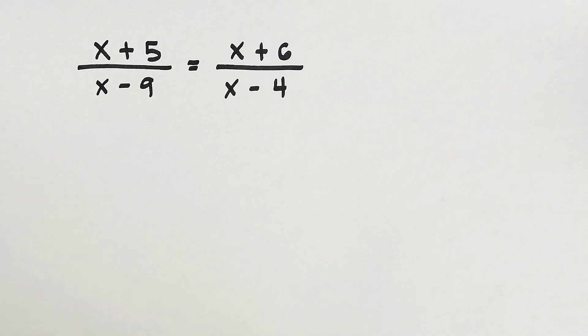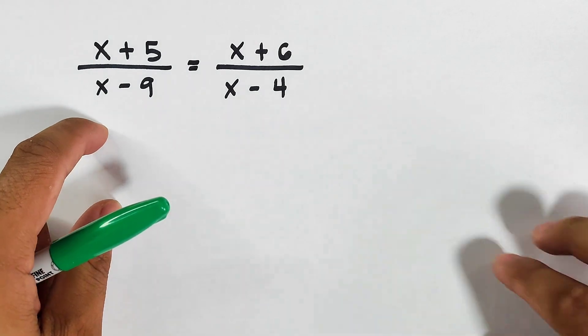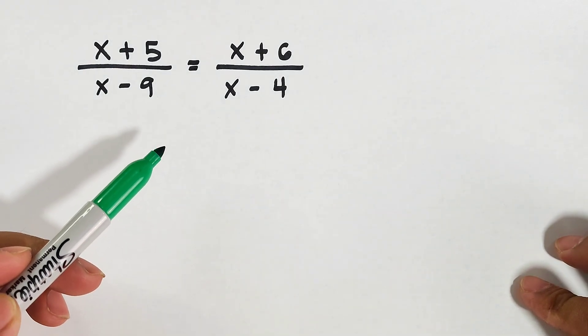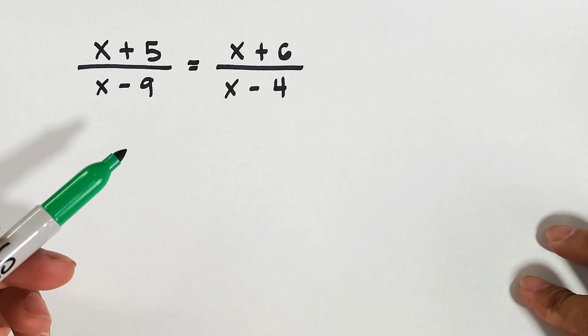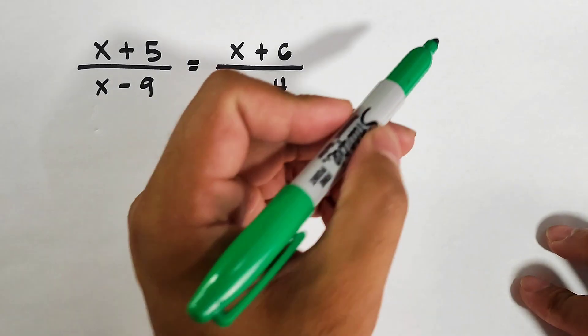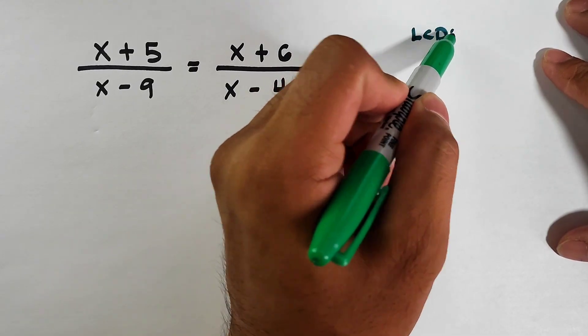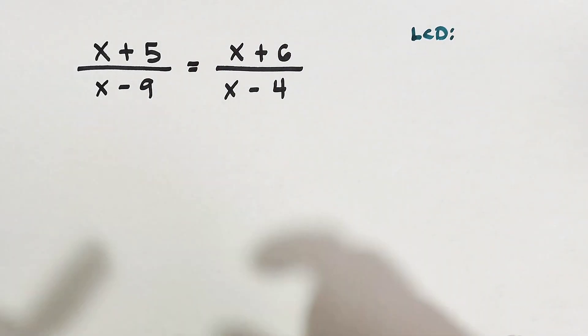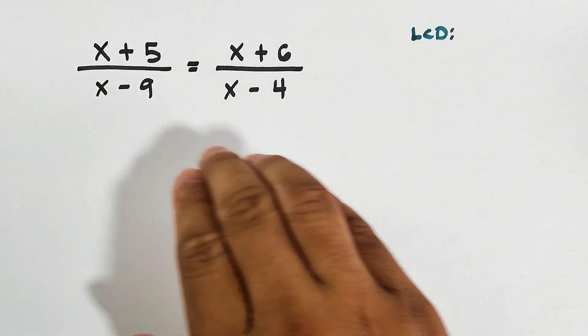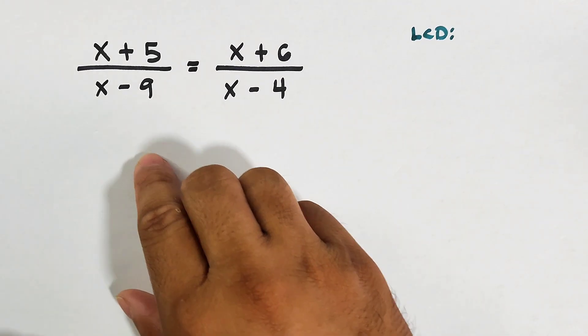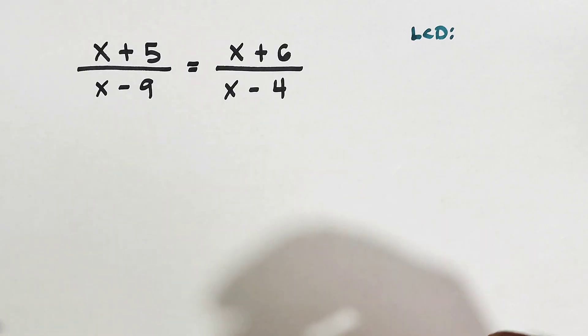Basically, in this kind of situation, since we have a rational expression on each side of the equation, we can use cross multiplication. But we won't do that. We will use the LCD to eliminate these denominators, because not all rational equations can be solved by cross multiplication. So first, let us identify what is the LCD.